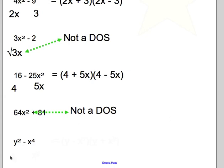And for the last example, we have y² - x⁴. The square root of y² is y. And the square root of x⁴ is x².